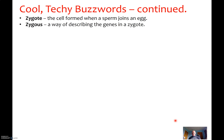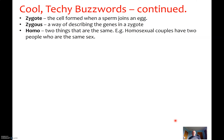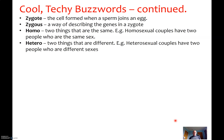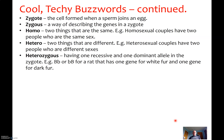Zygous — something zygous is a way of describing the genes in a zygote. Homo means two things that are the same, and we're going to use this in the word homozygous. Homosexual couples have two people who have the same sex — my cousin married a nice lady, and they're a homosexual couple. Two things that are different are hetero. Heterosexual couples have two people who are different sexes. Heterozygous — hetero means different, zygous means what's in the zygote — means having one recessive and one dominant allele. For example, big B little b, or little b big B, for a rat that has one gene for white fur and one gene for dark fur.